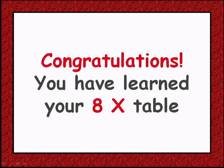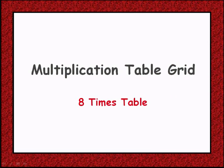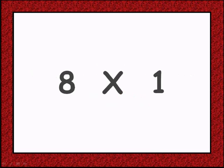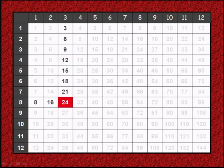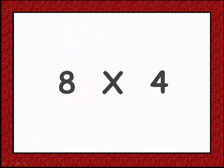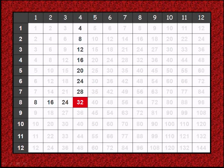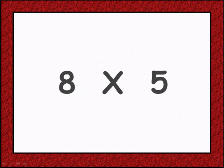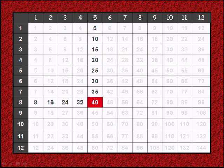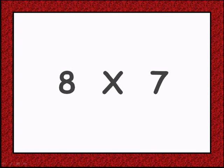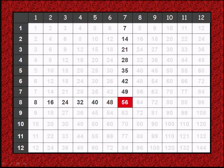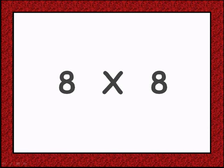You have learnt your 8 times table. We will practice one more time, this time a little differently. Please repeat with me. 8 times 1 is 8, 8 times 2 is 16, 8 times 3 is 24, 8 times 4 is 32, 8 times 5 is 40, 8 times 6 is 48, 8 times 7 is 56, 8 times 8 is 64.